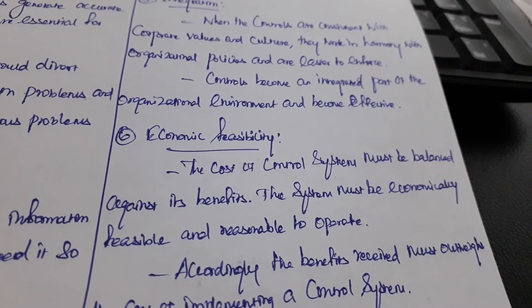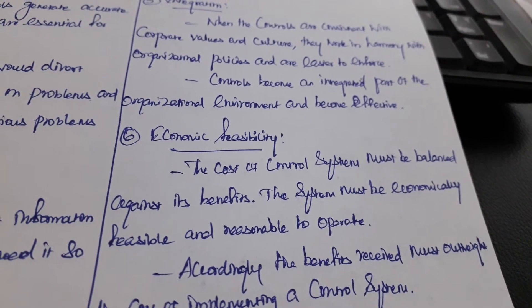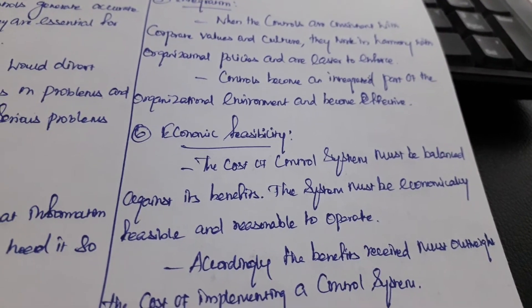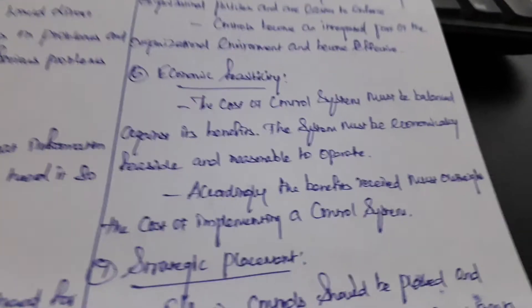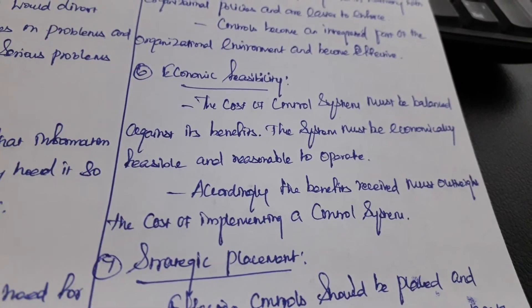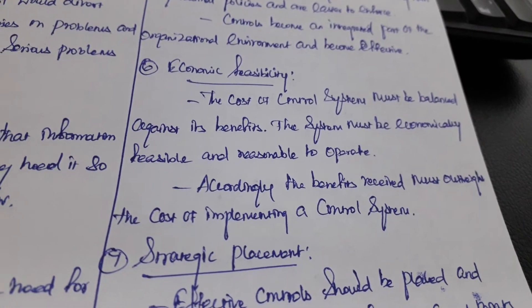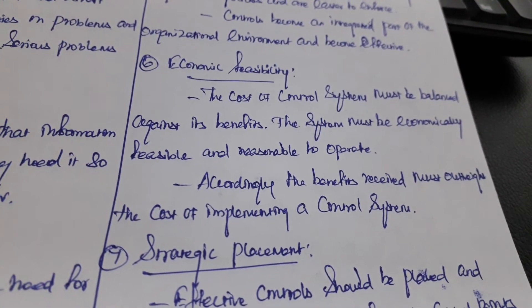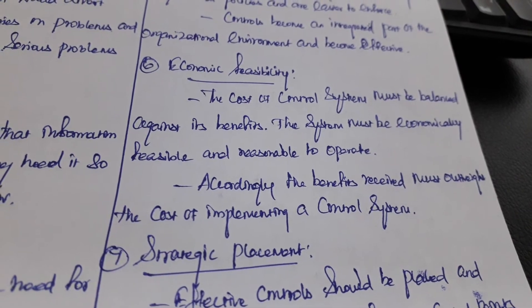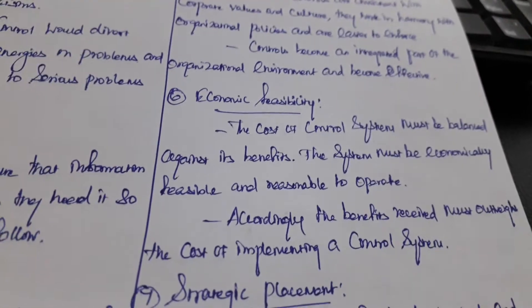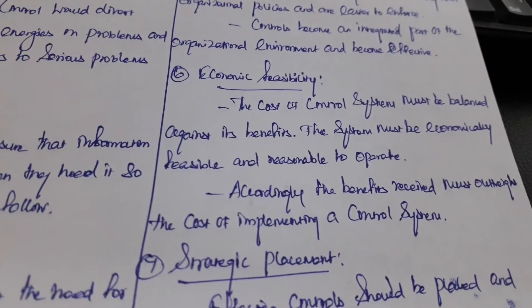A lot of time, energy, and resources may be wasted. Accordingly, the benefits received must outweigh the cost of implementing a control system. Benefits must exceed the costs of the implemented control.